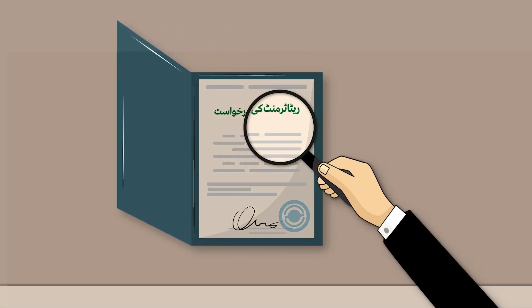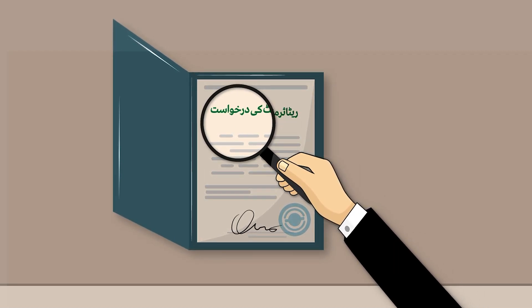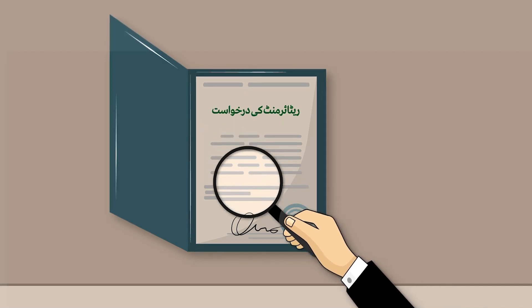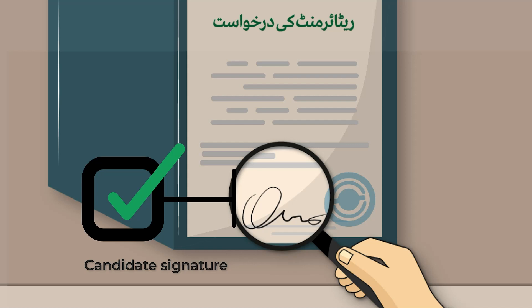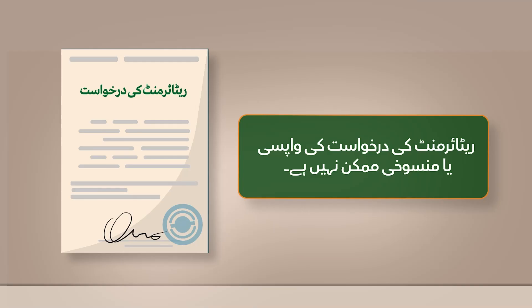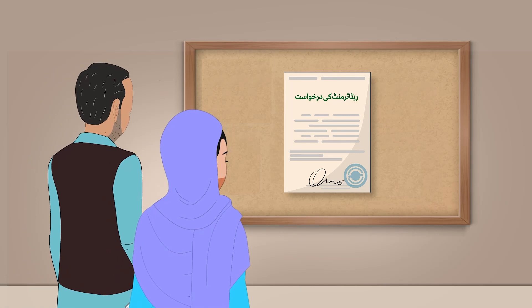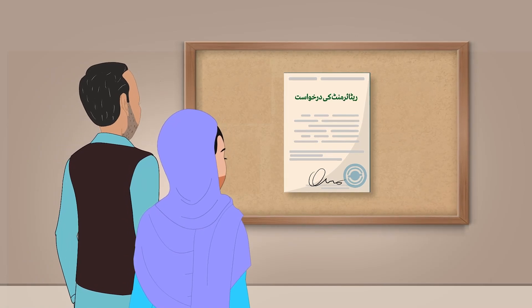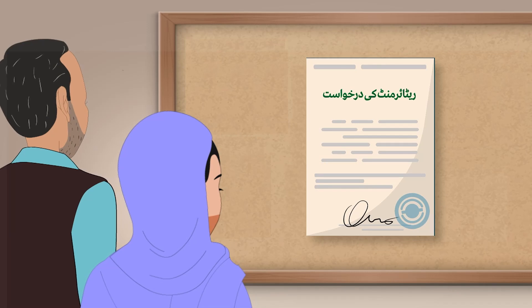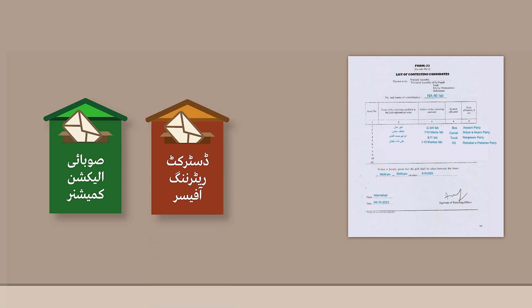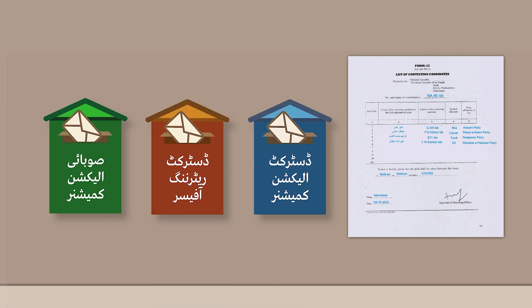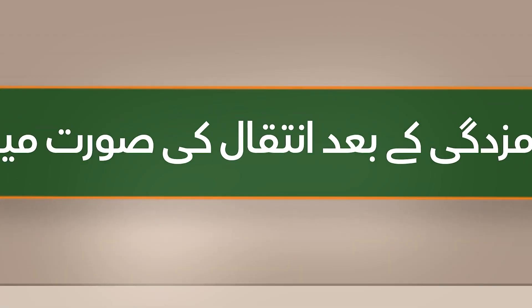Retirement of a candidate from election: The retirement request can be submitted in person by the candidate along with their signature, or through an authorized lawyer. Retirement requests cannot be withdrawn or cancelled. The Returning Officers will display the notice of retirement of a candidate at a prominent place in their office and communicate the same through a revised Form 33 to the relevant Provincial Election Commissioner, District Returning Officer, and District Election Commissioner.